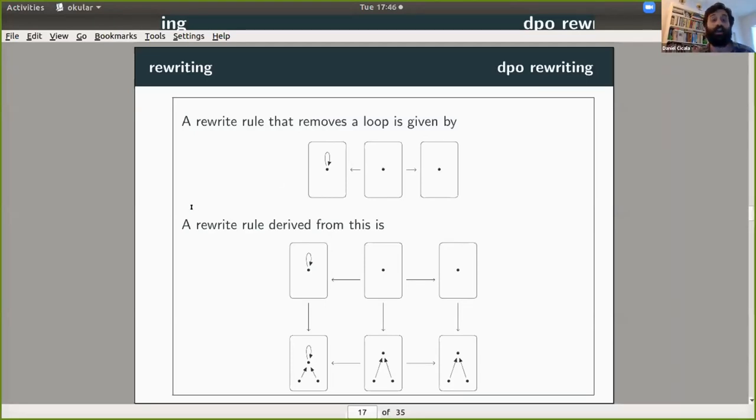And so how you read this span as a rewrite rule is you look at the leftmost object and that's the thing you want to substitute for. Or that's the thing you want to remove. And the thing on the right is the thing that you want to substitute in its place. And then what's in the middle is just sort of what's fixed as rewriting happens. And then to actually apply a rewrite rule. Well, we concoct what's called a double pushout diagram.